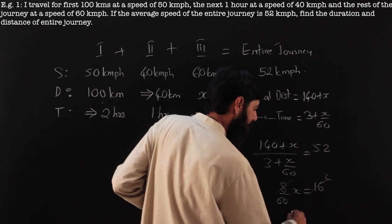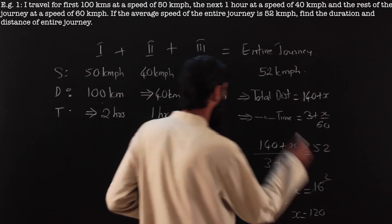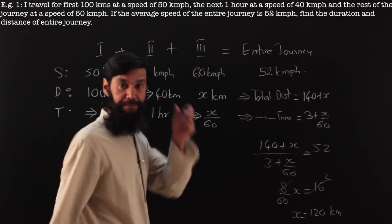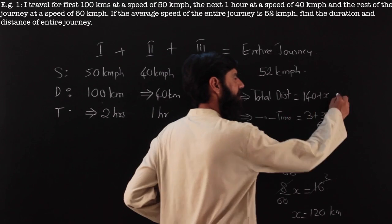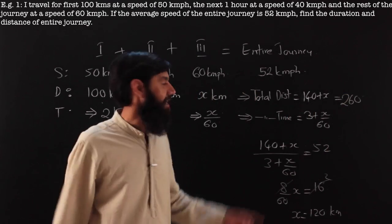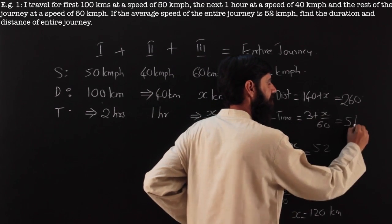Twice x is equal to 120, so x is 120 kilometers. The total distance is going to be 260 kilometers for the entire journey, and 120 by 60 is 2, so the total time is going to be 5 hours.